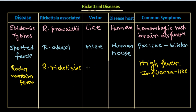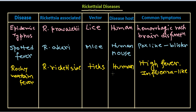The vector for Rocky Mountain fever is ticks — small arthropod vectors, because there are always certain arthropod vectors associated with rickettsial diseases. The disease host is human beings, along with some rodents that are also associated.